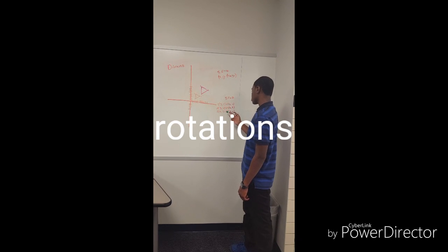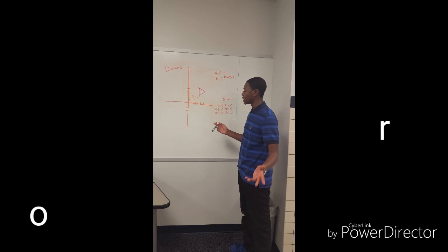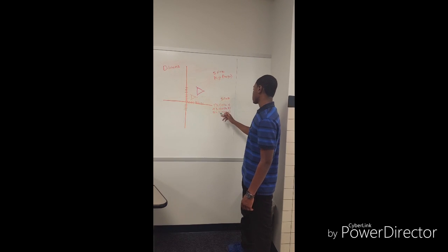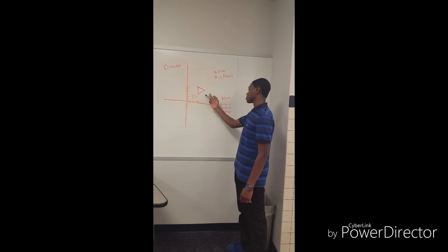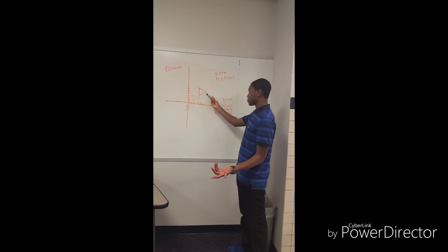For 3, 4, multiply times 2, we get 6, 8, and that's z prime or x prime, whatever you want to label that. Do the same thing. 5, 3 goes to 10, 6, and you plot that as well. So you go from your pre-image to your foreign image.